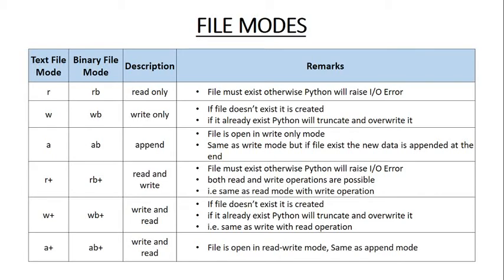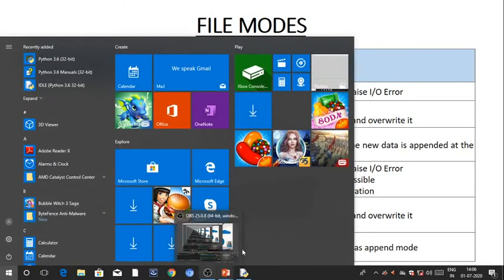If you open a file in write mode and write nothing, the file becomes blank because it gets truncated. In append mode it is very similar to write mode, but the only difference is the previous data will not get deleted — you write into the file, and both the previous data and the new data remain in the file. Let's see all three modes programmatically.